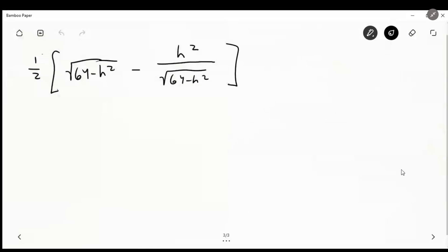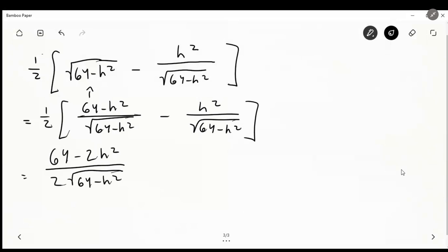Yeah. So we can multiply the numerator and denominator of this term by radical 64 minus h squared, and then we'll be left with 64 minus h squared over radical 64 minus h squared over the same denominator. Now we can combine these terms. So we have 64 minus 2 h squared over 2 radical 64 minus h squared. This becomes 32. And now we can just write that as 32 minus h squared over radical 64 minus h squared. Let me just double-check that that's right. Good.